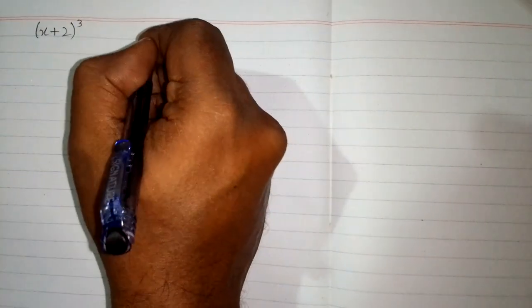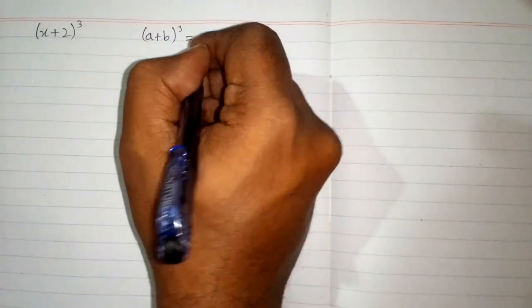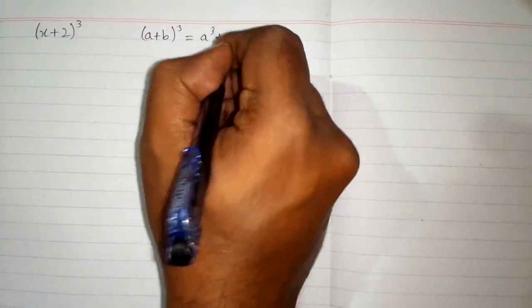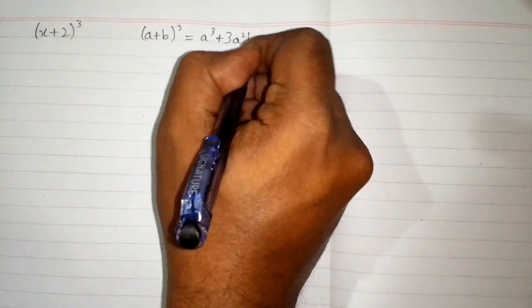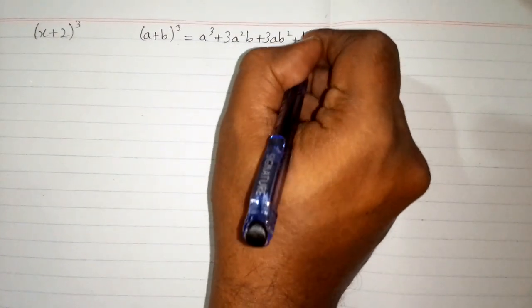In this video we will find the cube of x plus 2. So we will use the formula (a+b)³ is equal to a³ + 3a²b + 3ab² + b³.